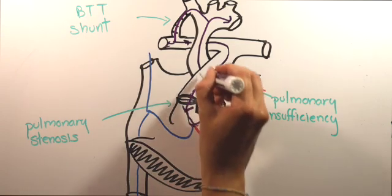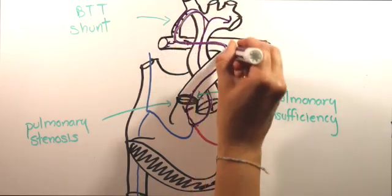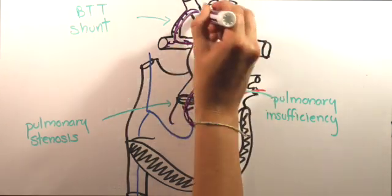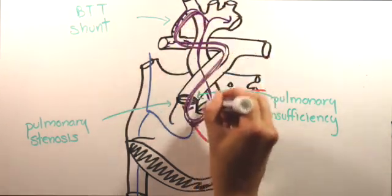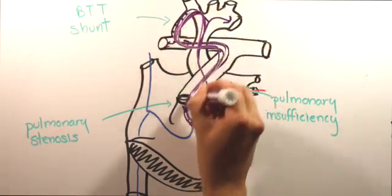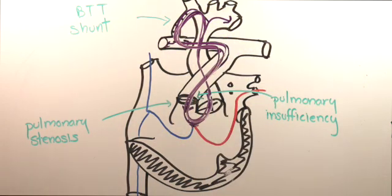exit the heart through the aortic valve, crosses the BTT shunt into the PAs, then flows down the main PA back into the heart. Around and around the blood goes, never making it to the body or to the lungs. A circular shunt.